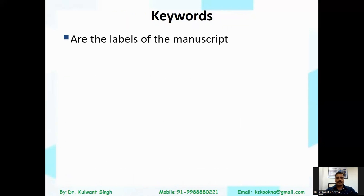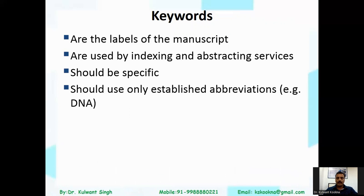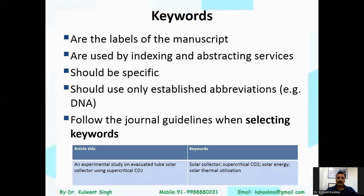The next section is keywords. Keywords are labels for your manuscript and are used by indexing and abstracting services. They should be very specific and use only established abbreviations like DNA, following the journal guidelines when selecting keywords. For example, if your title is 'An Experimental Study on the Populated Cube Solar Collector Using Supercritical CO2,' keywords may include: solar collector, supercritical CO2, solar energy, and solar thermal utilization.